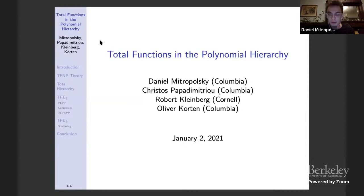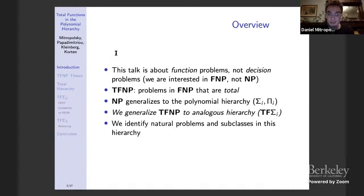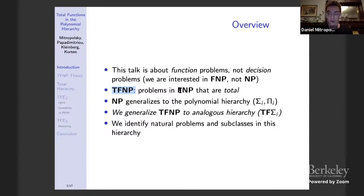Here's an overview at a very high level. We're interested in function problems, not decision problems — specifically FNP and not NP. For example, think of the relation mapping satisfiable formulas to their satisfying assignments. Not every formula participates in this relation because there are formulas without satisfying assignments. This motivates the definition of TFNP: those problems in FNP that are total, so for every input there's an output.